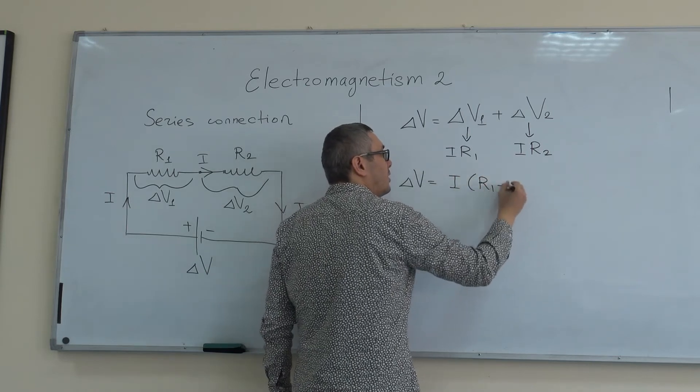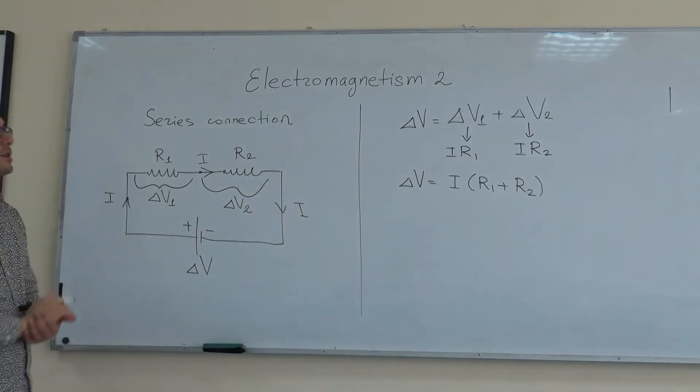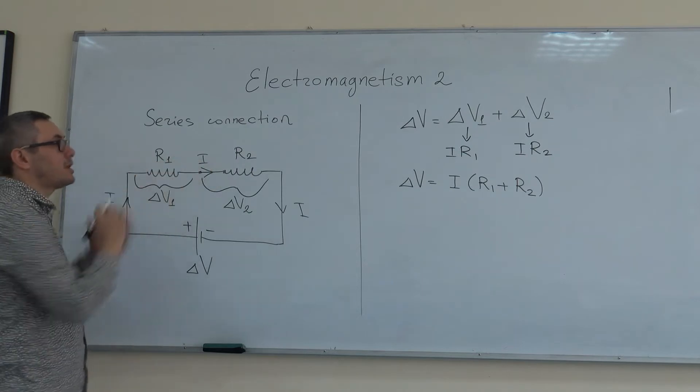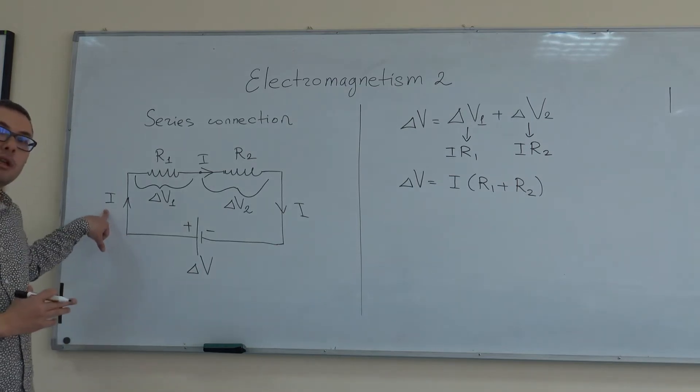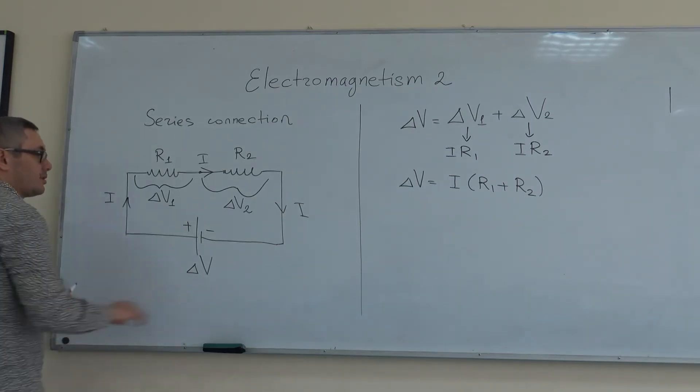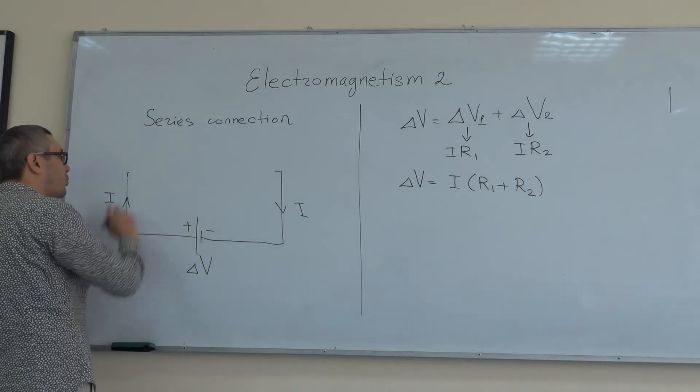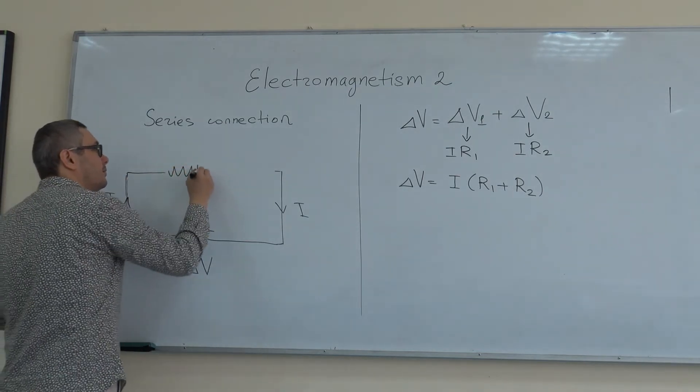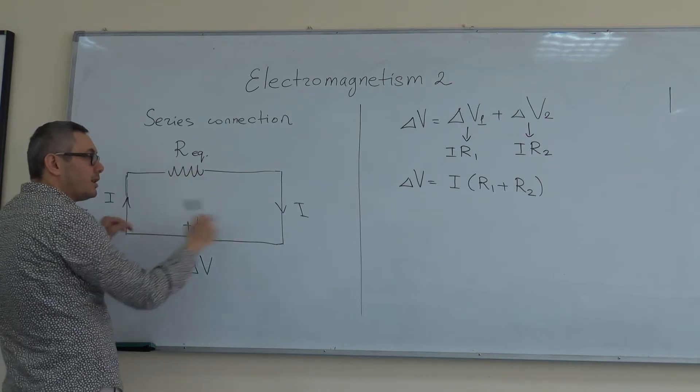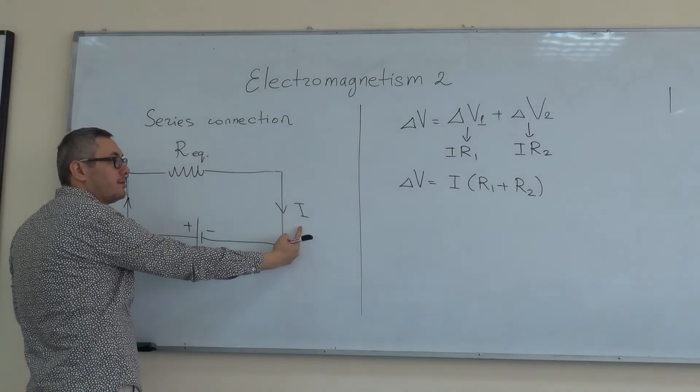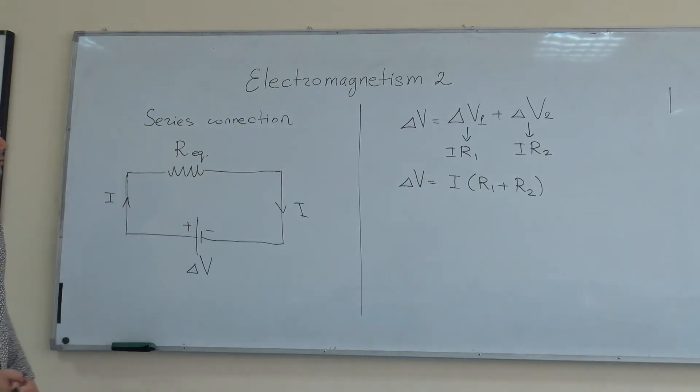Now the question is: can we change these two resistors with one single resistor such that the current flowing in the circuit doesn't change? Let's say we get rid of these resistors and change them with one single resistor. We're going to call it R equivalent, because it drives the same amount of current. So the question is: how is this R equivalent related to R1 and R2?